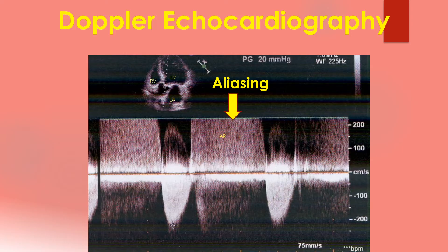When the velocity is beyond the limit of the Doppler mode used, the upper part is cut off as can be seen above the baseline in this case. The remaining part is shown below the baseline. This is known as aliasing and wraparound, and the direction of flow is difficult to interpret. In such situations, continuous wave Doppler with a higher velocity range is used.